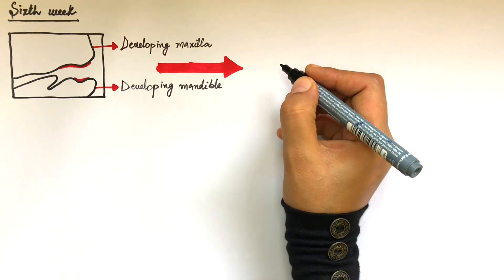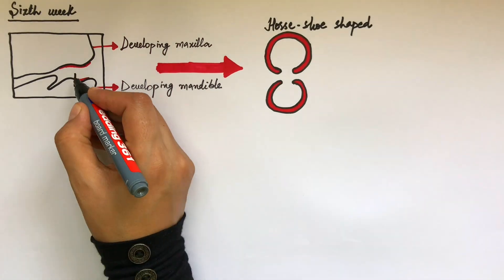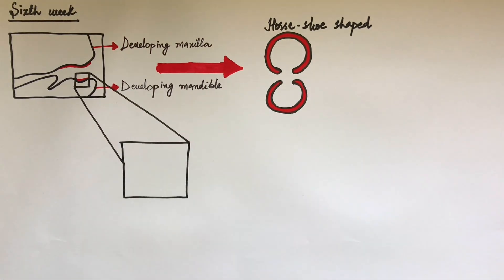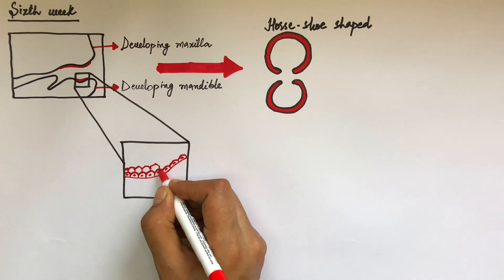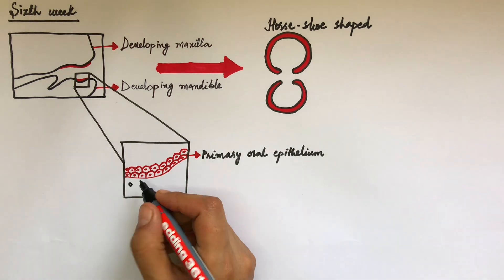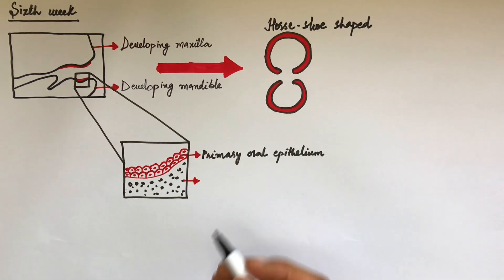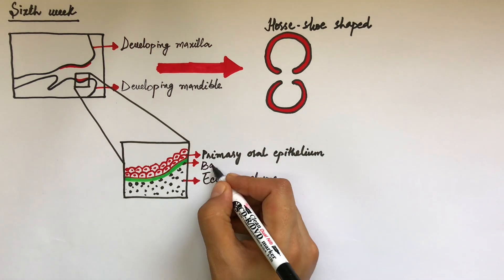This thick band roughly resembles a horseshoe in shape. If we zoom in this area under a microscope, we will see a superficial layer of primary oral epithelium resting on the underlying ectomesenchyme. The superficial layer of oral epithelium is separated from the underlying ectomesenchyme through a layer of the basement membrane.